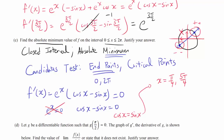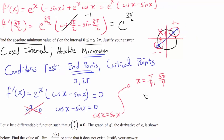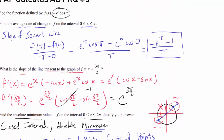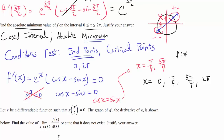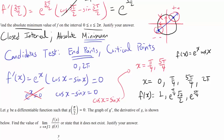Now let's apply the Candidate's Test, evaluating f at x equals 0, pi over 4, 5 pi over 4, and 2 pi. Our function is f of x equals e to the x cosine of x. At x equals 0: e to the 0 times cosine of 0 equals 1. At x equals pi over 4: e to the pi over 4 times cosine of pi over 4, which is square root of 2 over 2. At x equals 5 pi over 4: e to the 5 pi over 4 times cosine of 5 pi over 4, which is negative square root of 2 over 2.